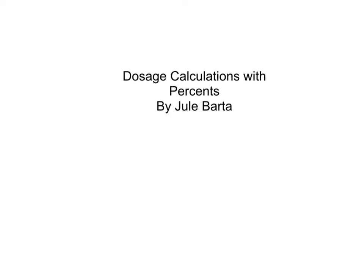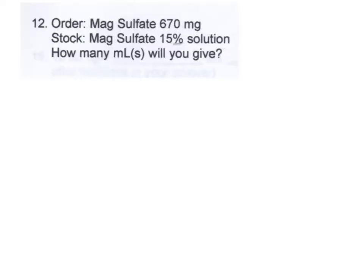So for this video tutorial I'm going to talk about doing dosage calculations when one of your units of measure is expressed as a percent. As you can see with this order, the doctor orders magnesium sulfate 670 milligrams and when you go to your shelf you find that you have magnesium sulfate as a 15% solution.